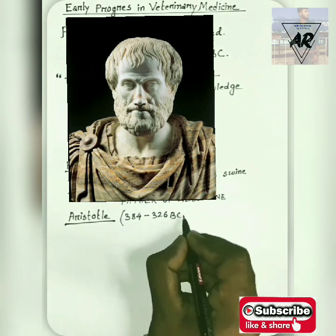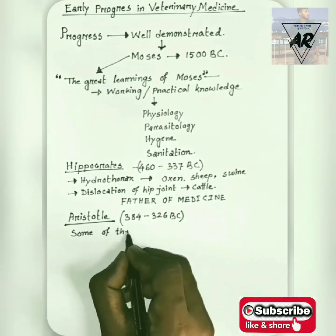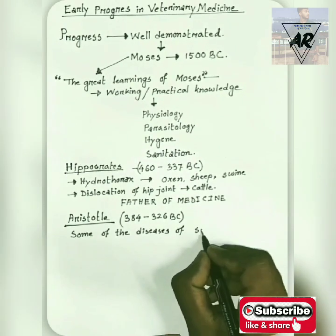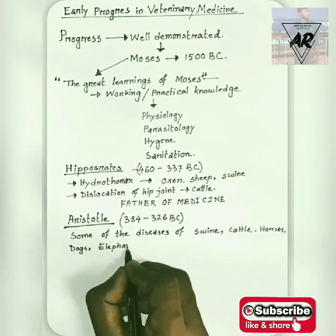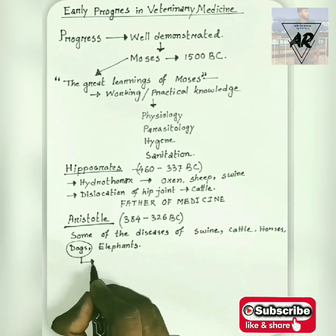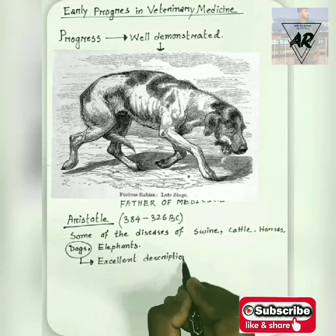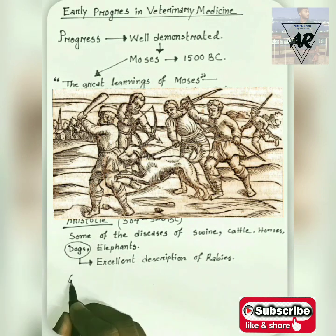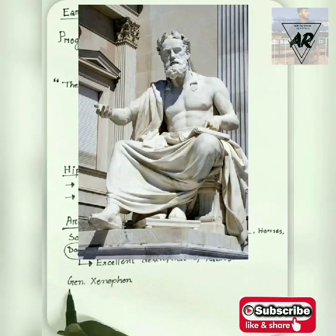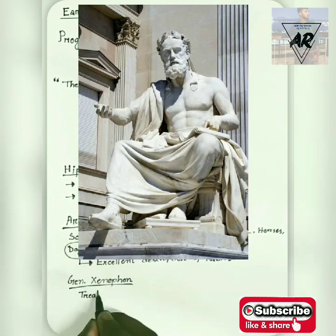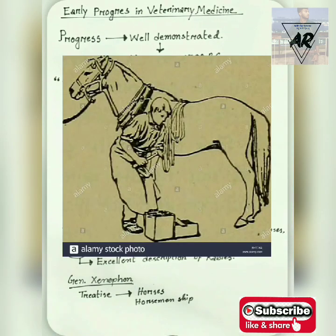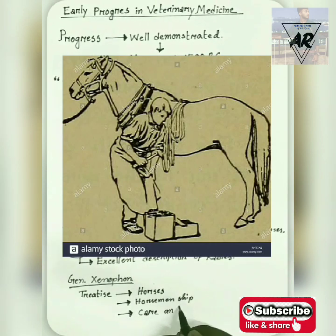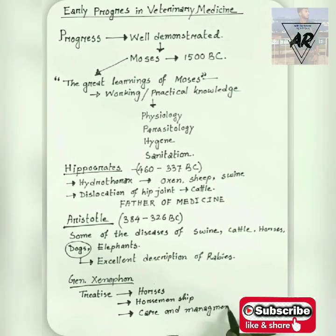Then comes the period of Aristotle, during 384 to 326 BC. He discovered some of the diseases of swine, dogs, cattle, horses, asses, and also elephants. In his descriptions of diseases of dogs, he gave an excellent description of rabies. Then comes General Xenophon, during 349 to 259 BC, who wrote a treatise on horse and horsemanship in which he emphasized diseases and care of the feet.